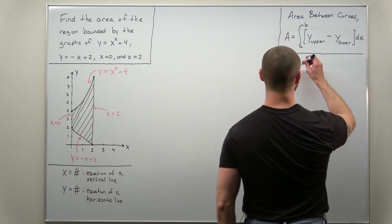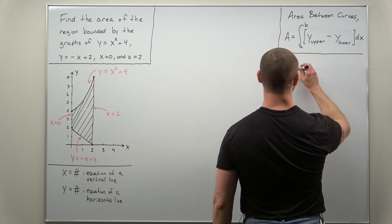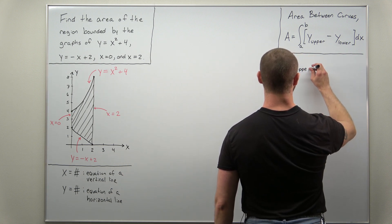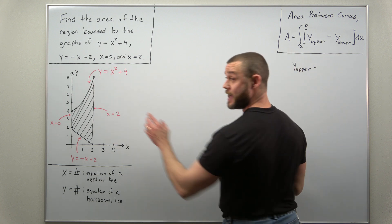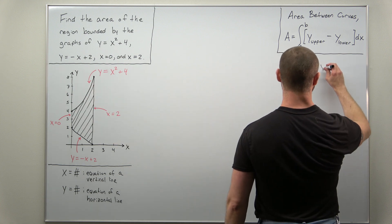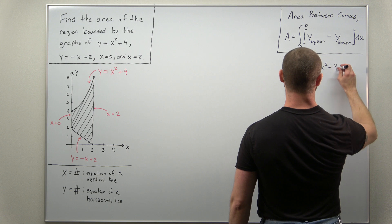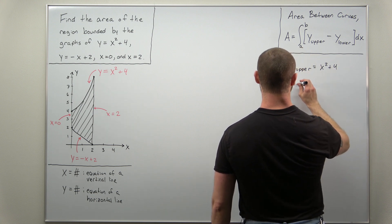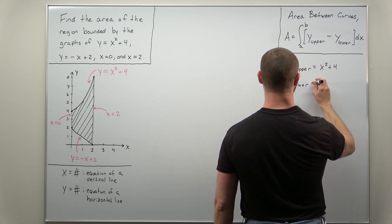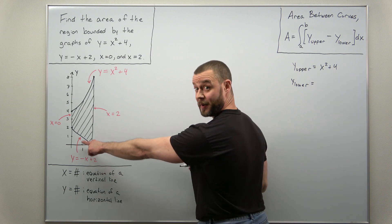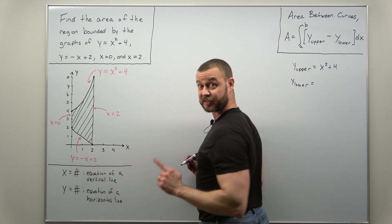So here for our formula we're just going to use y upper, that's going to be x squared plus 4, and we're going to use y lower as the bottom curve, negative x plus 2.